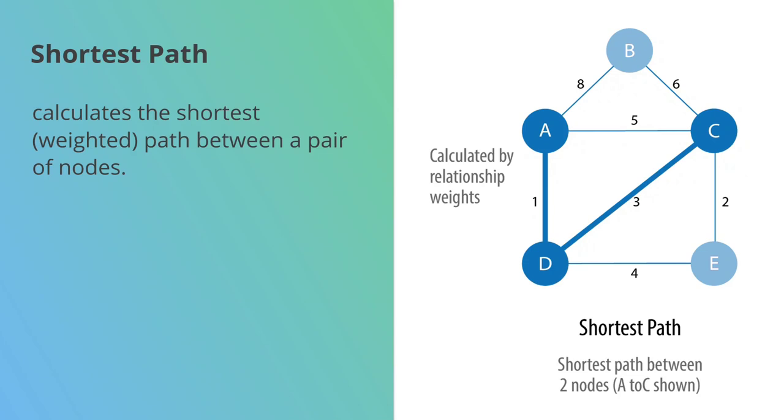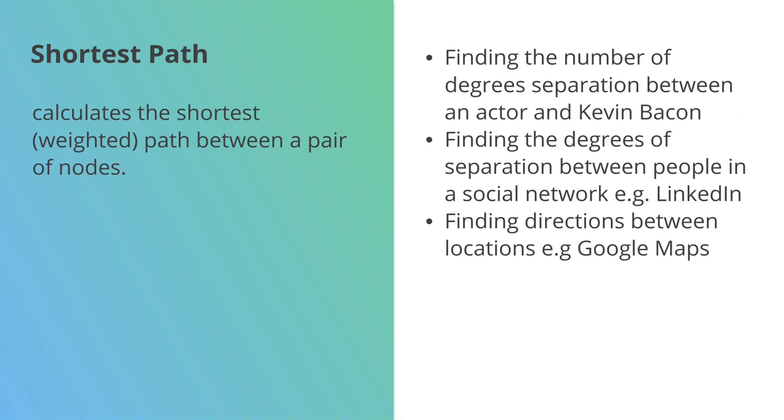We try to find the minimum cost path between the nodes. This is quite a commonly known algorithm. If you're using something like Google Maps, it would be using some sort of variant of shortest path. You say, "I'm at this location, show me the quickest way to get somewhere else" - that would be a shortest path search.